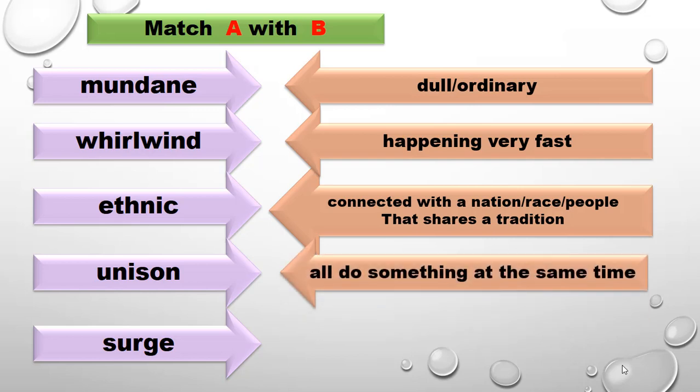Now, what is 'unison'? Children, 'uni' means equal or same — like 'unique.' The meaning of unison is: all do something at the same time.